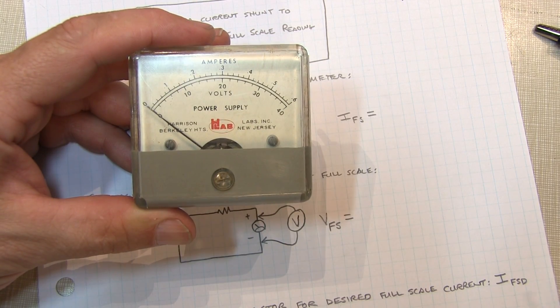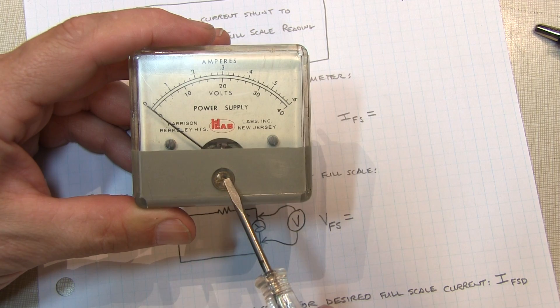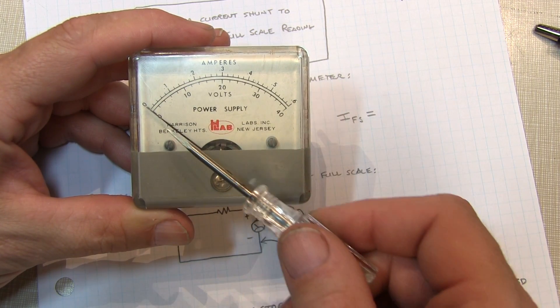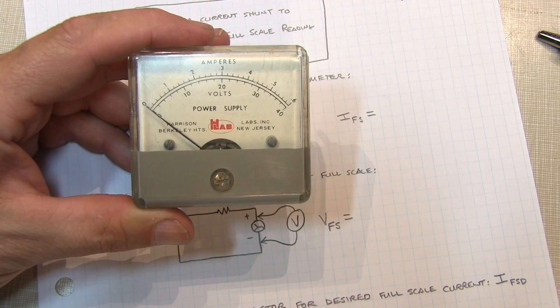Before getting started, the first thing you'll want to do is adjust the centering screw on the front face of the meter, if it has one, to ensure that your dial pointer is lined right up with zero in the resting position.